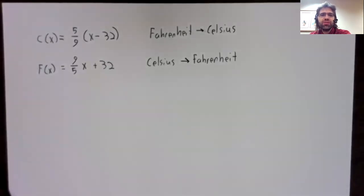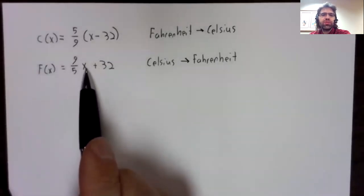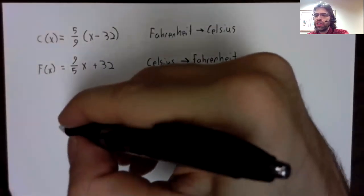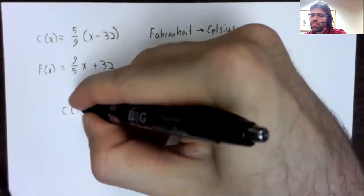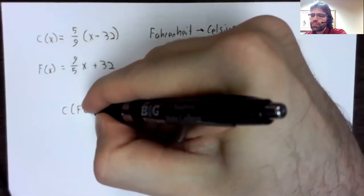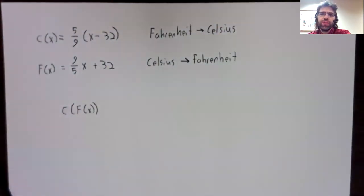Sometimes functions undo one another. The example I like to give of this is conversion functions. What we have here is a function that takes the temperature in degrees Fahrenheit and converts it to degrees Celsius, and a function that takes the temperature in degrees Celsius and converts it to degrees Fahrenheit.